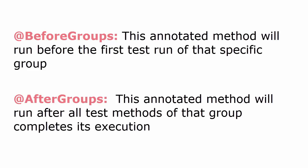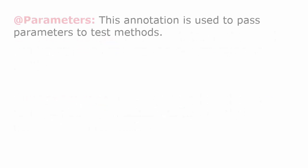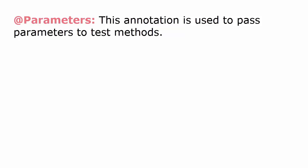@AfterGroups: this annotated method will run after all test methods of that group complete their execution. For example, if we have four tests in a group, @BeforeGroups will be executed before the first test in that group, and @AfterGroups will be executed after all the tests in that particular group. @Parameters: this annotation is used to pass parameters to test methods.